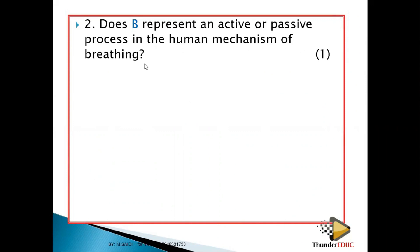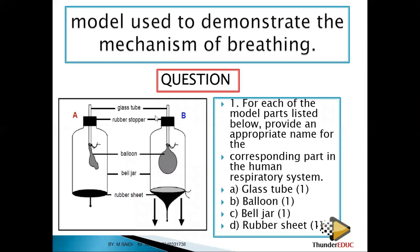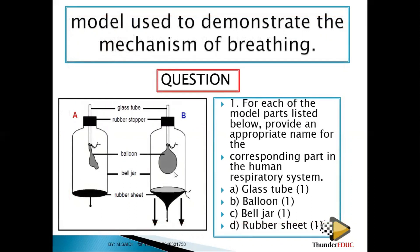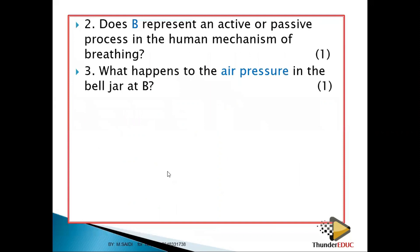Does position B represent an active or passive process? Since breathing in requires muscles to contract, it shows an active process. What happens to air pressure in the bell jar at B? The air pressure inside reduces because the volume has increased. When volume increases, pressure reduces, while the outside air pressure becomes greater than the inside.